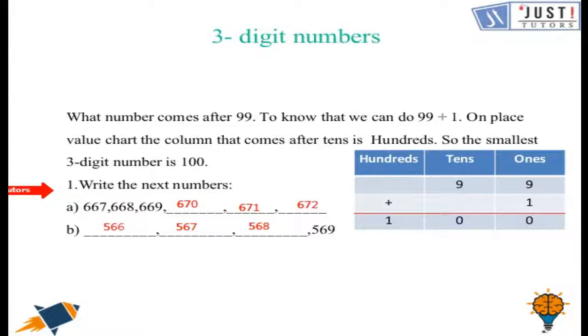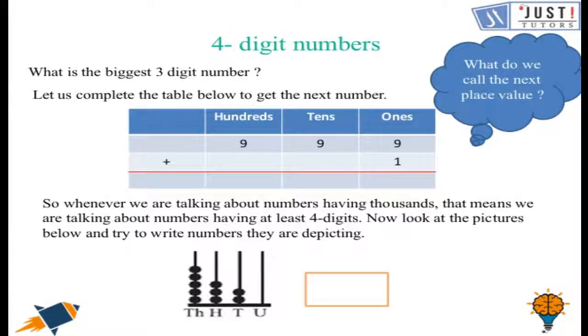Let us move ahead and let us learn what is a 4 digit number. So can you give me the biggest 3 digit number? It is 999. So what number comes after 999? The same as we did before. Let us add 1 to 999.